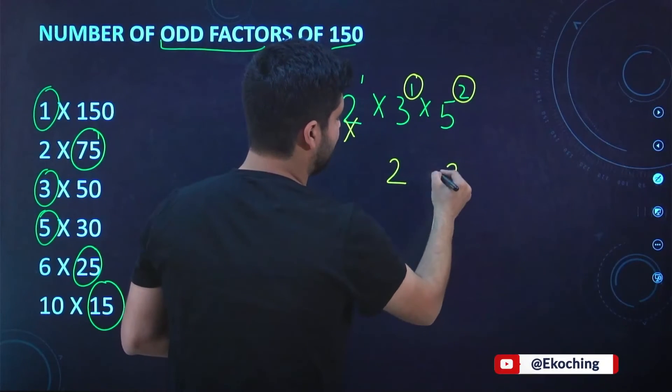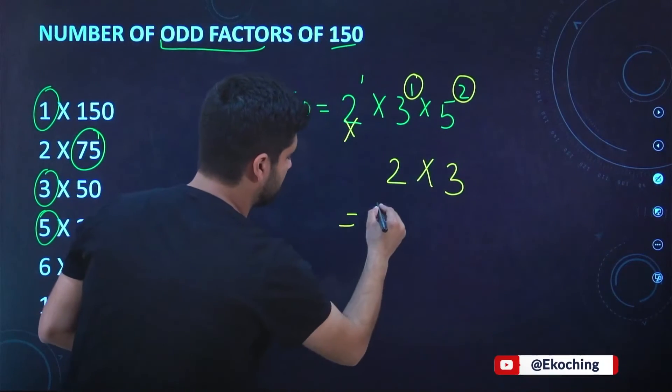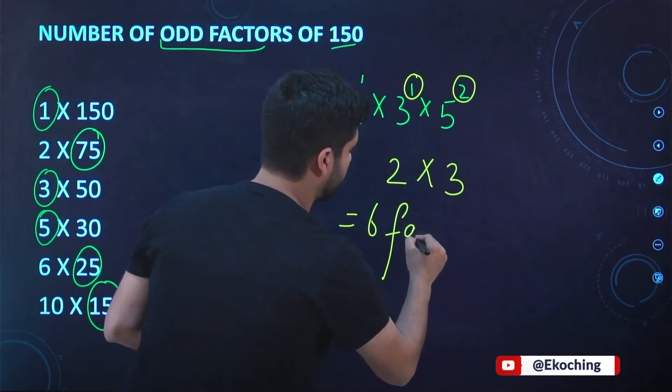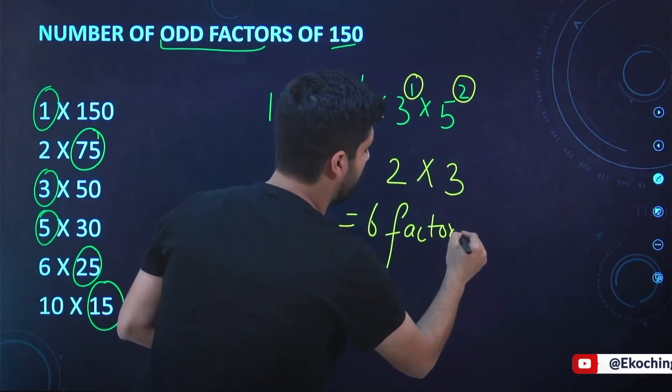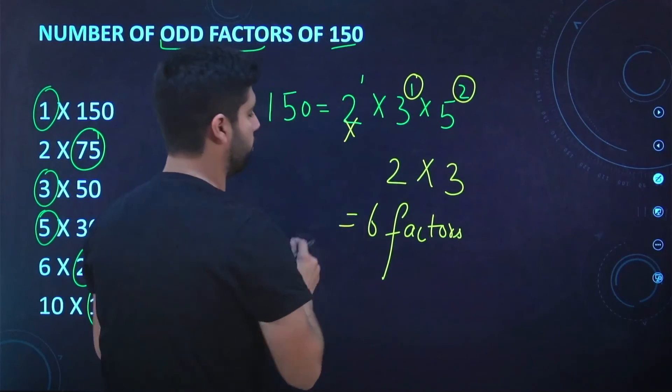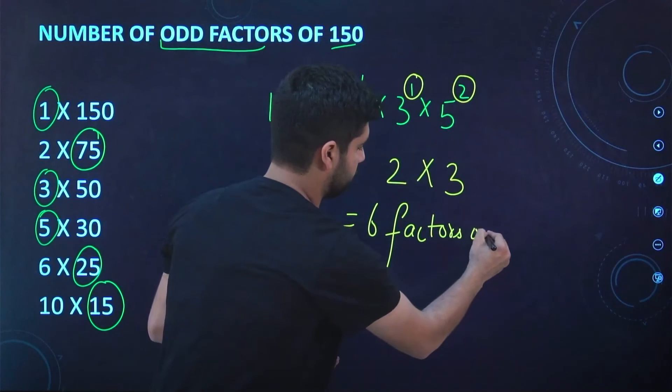it will be written like this: 2 × 3. Your answer will be the same - six odd factors for the number 150.